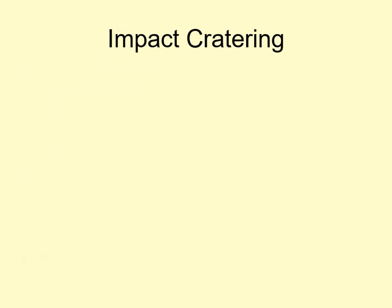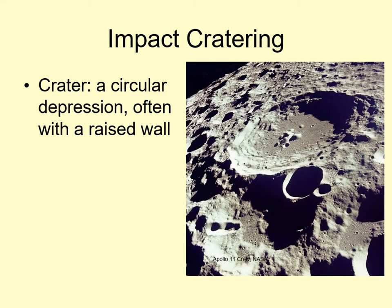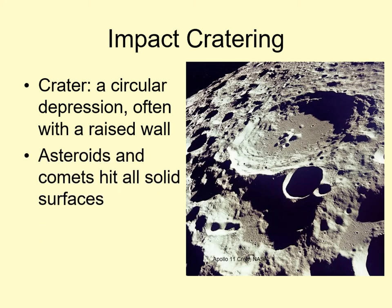Impact cratering is the most important surface process in the solar system. An impact crater is a hole or depression in the ground. Craters are almost always round, and they often have raised walls around the outside, and sometimes other features inside them. Impact craters are caused by asteroids and comets hitting the surfaces of worlds. It's worth noting that the crater is the hole we see in the surface, and the impactor is the thing that hits the surface — planets are not hit by craters.